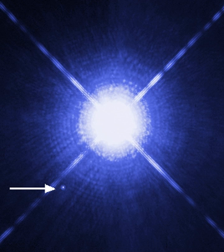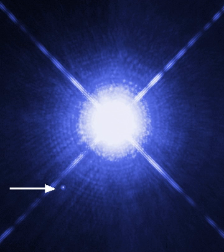White dwarfs are thought to represent the endpoint of stellar evolution for main-sequence stars with masses from about 0.07 to 10 solar masses. The composition of the white dwarf produced will depend on the initial mass of the star. Current galactic models suggest the Milky Way galaxy currently contains about 10 billion white dwarfs.